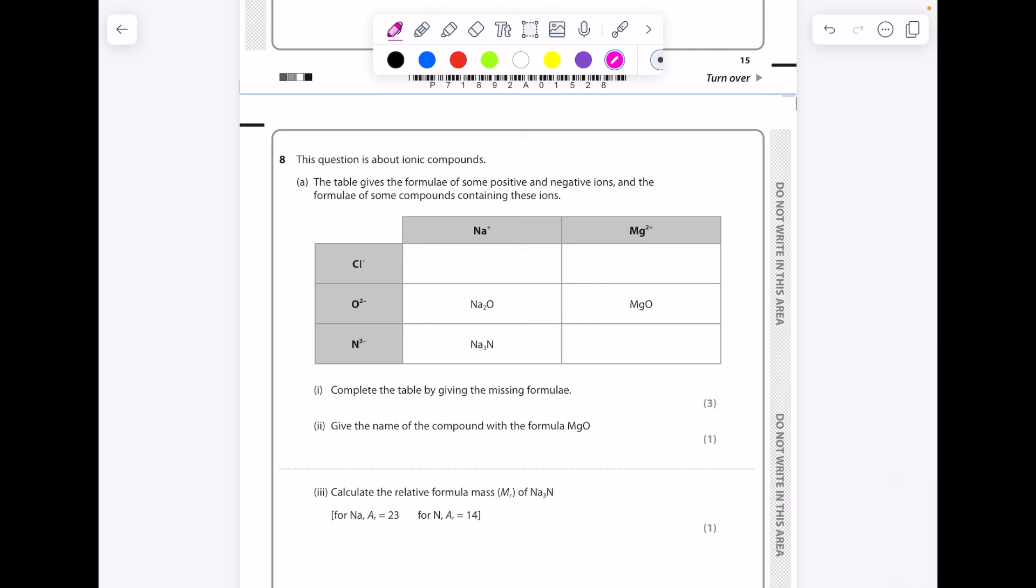This question is about ionic compounds. The table gives the formulae of some positive and negative ions and the formulae of some compounds containing these ions. Complete the table by giving the missing formulae. So remember, the metal always comes first. Double-check to see if the charges are balanced. They are, so that's just sodium chloride. This time, Mg2+ Cl-. We have issues in that we need an extra Cl, so we write that as Cl2. And then down here we have Mg2+ N3-. This one's hard. What number does 2 and 3 both go into? 6. So just to show you, that means we need 3 Mg2+ and 2 N3-, so that becomes Mg3N2.